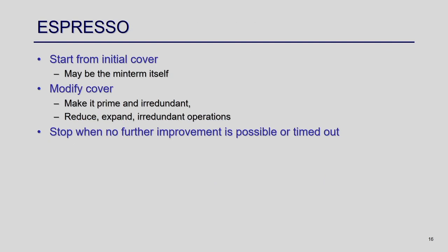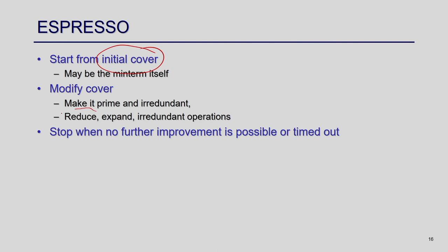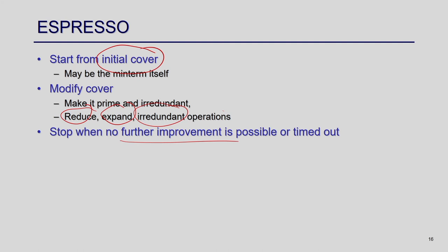Espresso starts with some initial cover of the terms and applies three key operations iteratively: expand, irredundant (IRRED), and reduce. These three operations are applied repeatedly until a local minimum is reached, after which a new random starting point is chosen for further improvement.